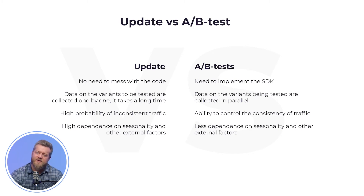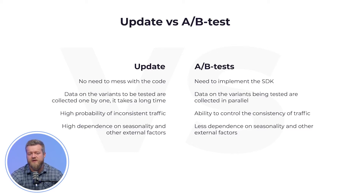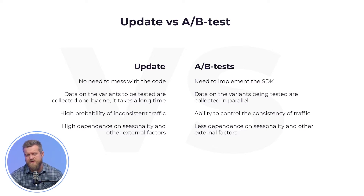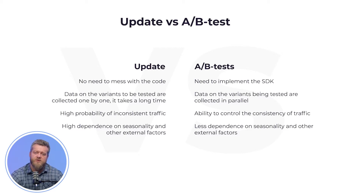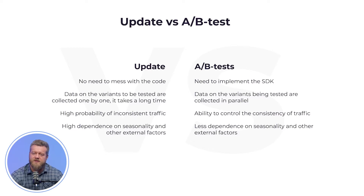Now, let's go back to the testing phase. When you are ready to test several variants of a new feature implementation, you have two choices. The first option is to release the feature immediately and update the main build of the app — make new screens, modify the code, and publish the new build to the App Store. After that, all you have to do is wait for the audience to interact with the new feature, collect the data, and interpret it. The second option is an A-B test.